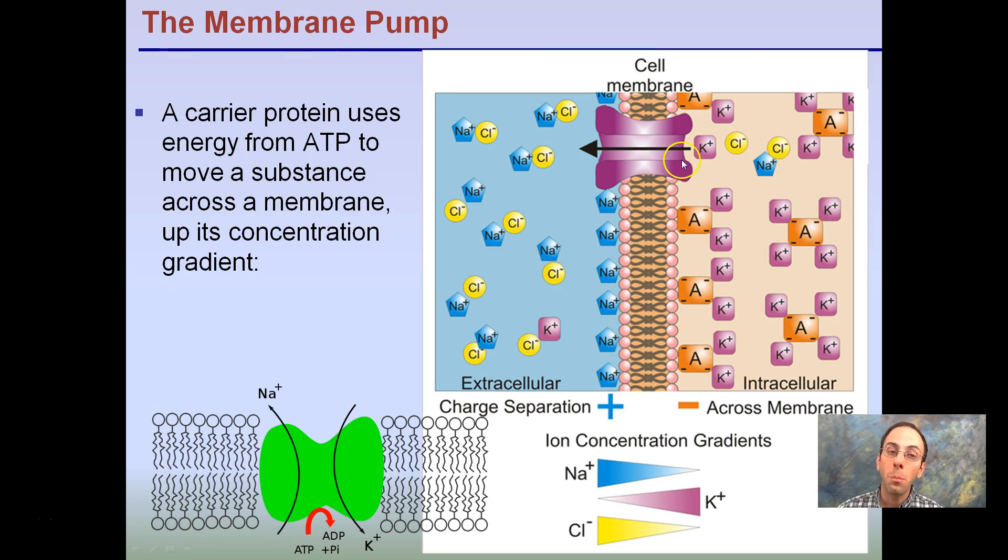Looking a little bit more at the membrane pumps, carrier proteins use energy from ATP to move substances across the membrane, up its concentration gradient. Same thing here, we see a high amount of potassium ions here, we see only one on this side. The pump is pumping them, in this case, across, requiring energy to move them across, moving that concentration gradient. Here we see again, here's our potassium coming in, and here's our sodium leaving. We see ATP being broken down, indicating energy is being required.